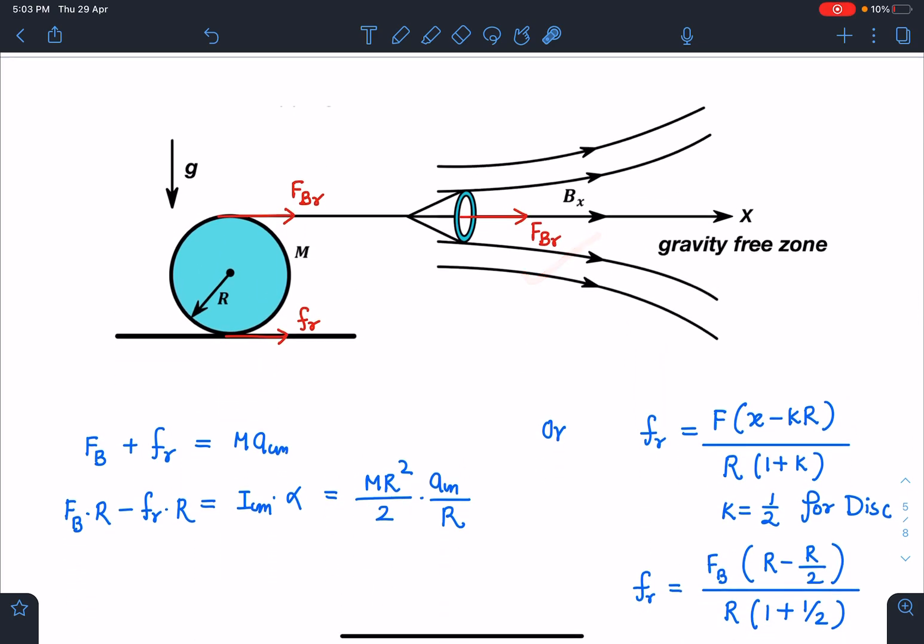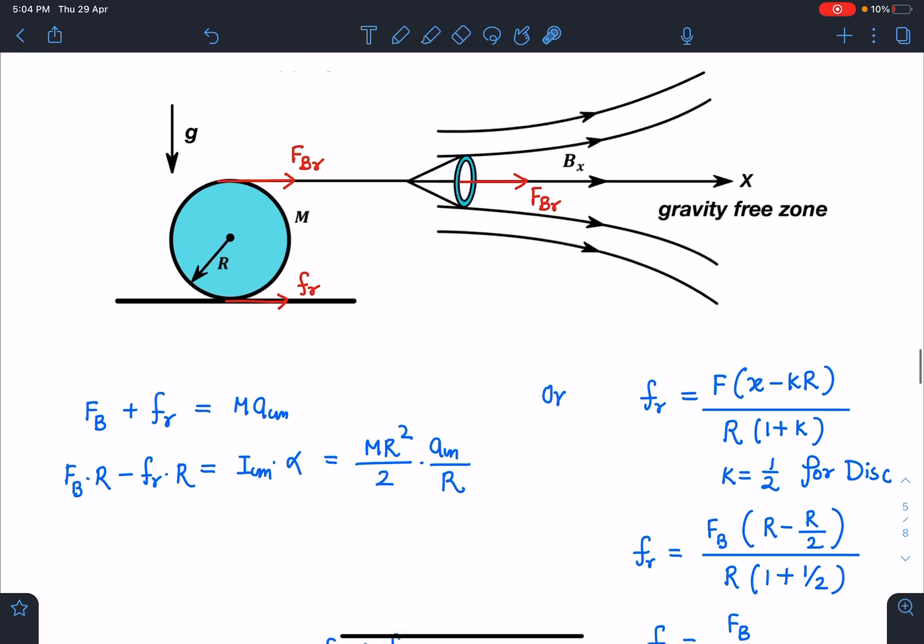So now we can see here this Fᵦᵣ is known to us. Due to this Fᵦᵣ, and since this is massless, if it was having mass then we have to write tension T here. Now since it is massless, Fᵦᵣ and this tension in the string also is Fᵦᵣ. Friction is acting in forward direction and it will bring some acm and α. So we can use this equation of translation and rotation: F + Fᵣ = Macm, and torque equation about center of mass: Fᵦ·R - Fᵣ·R = Icm·α, and acm = Rα.